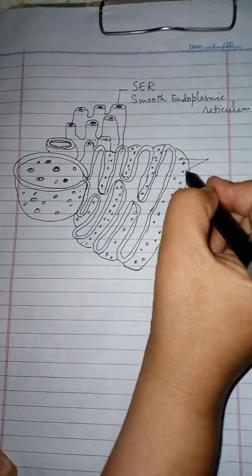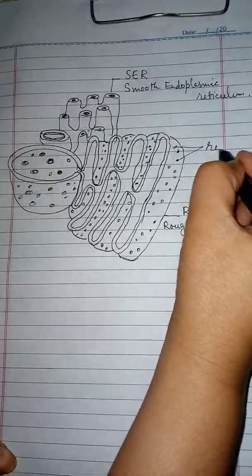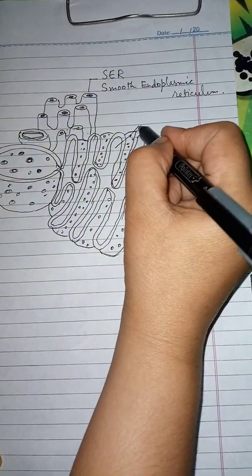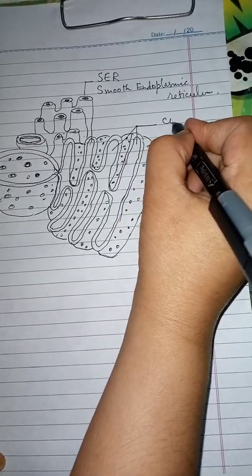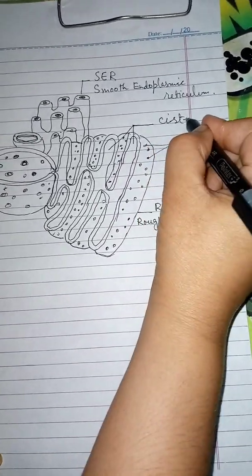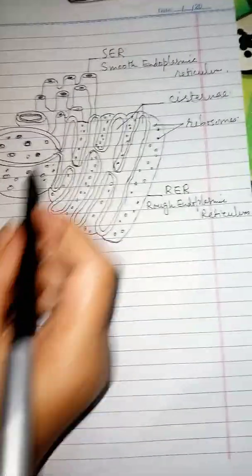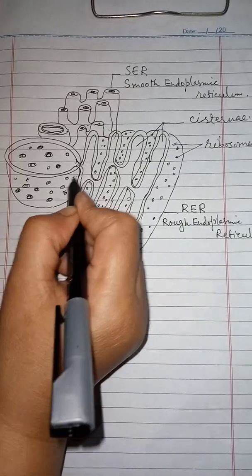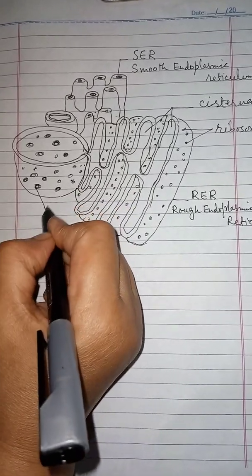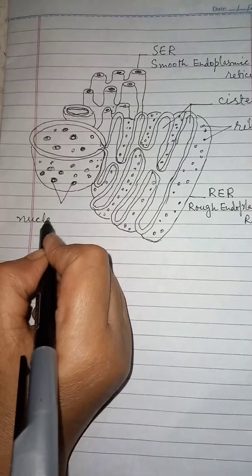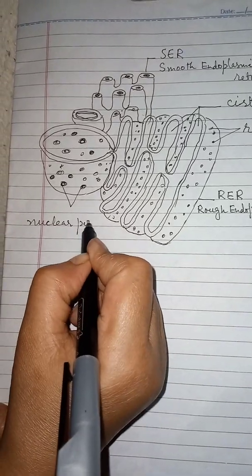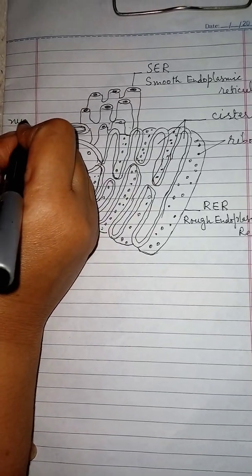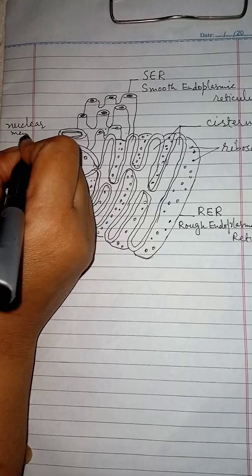These are ribosomes. These are cisternae or tubules present in the endoplasmic reticulum. We call them cisternae, and these structures are nuclear pores, and this is nuclear membrane.